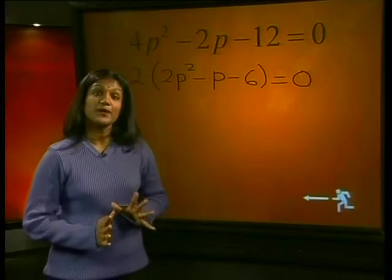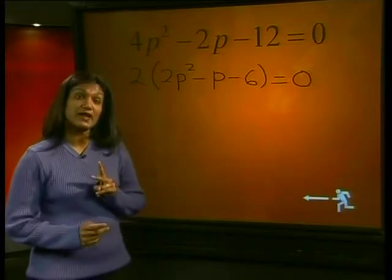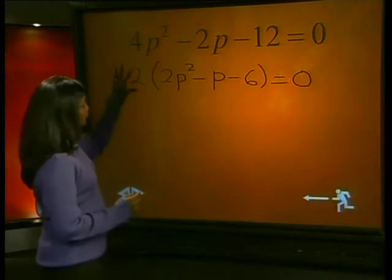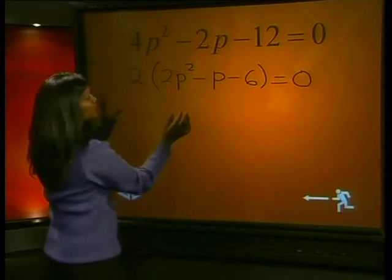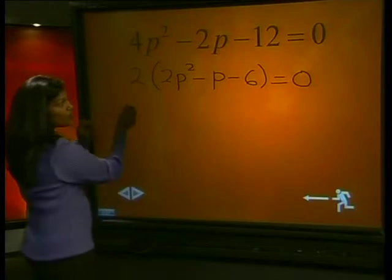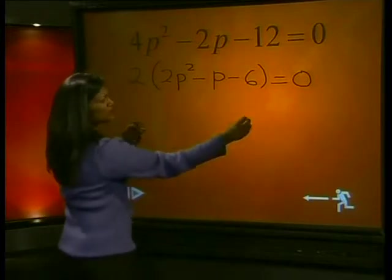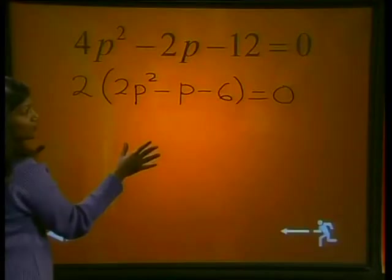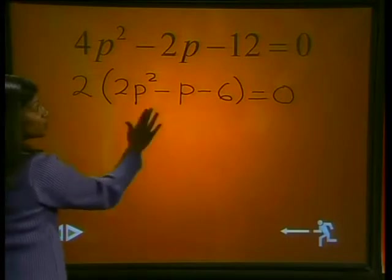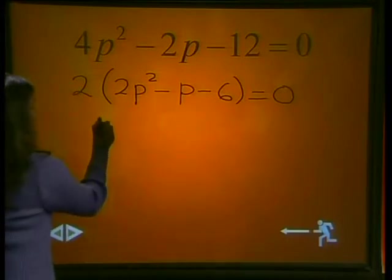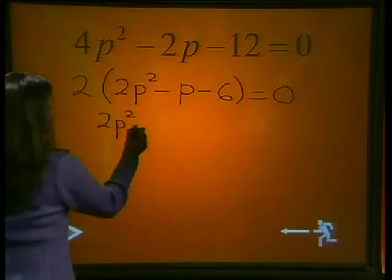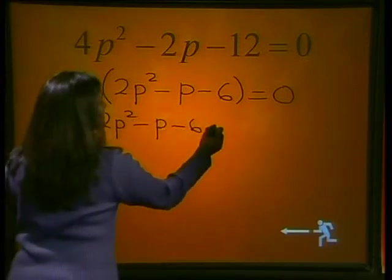Now what happens to this 2? We have two factors multiplied here to give zero: 2 and all the terms in this bracket, these are the two factors. This means that 2 could equal zero or this bracket is equal to zero. But we know that 2 can never equal zero so we can easily divide this whole equation by 2 on both sides. This gives us 2p² - p - 6 = 0.